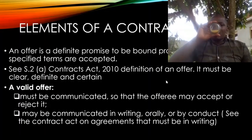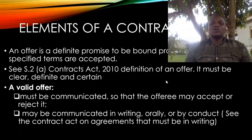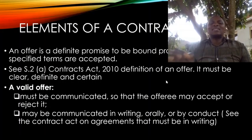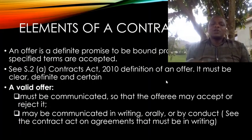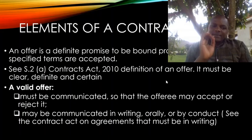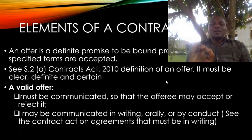Let me take you to the elements of the contract — starting with the element of offer. An offer has been defined as a definite promise to be bound, provided that certain special terms are accepted. This definition can be found under Section 2A of the Contract Act. For there to be an offer, it must be clear, definite, and certain. An offer must be communicated so that the offeree may accept or reject it, because you cannot talk about acceptance when there is no communication of an offer.